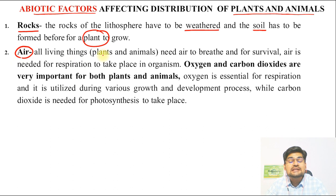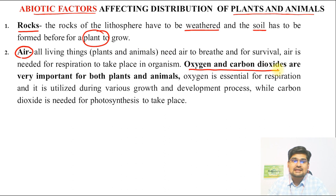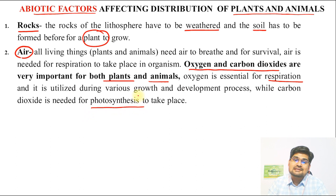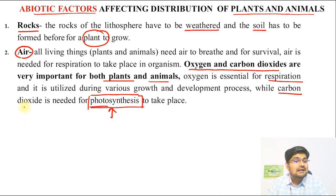Air is equally important because all living things — plants and animals — need air to breathe, to respire, and for survival. Oxygen is essential for respiration, for breaking down food, and for assimilation. All growth and development of plants and animals cannot happen without the air component. Photosynthesis is a fundamental process; plants prepare food under the presence of carbon dioxide, which then travels through the entire ecosystem. Air is therefore one of the most vital abiotic components.